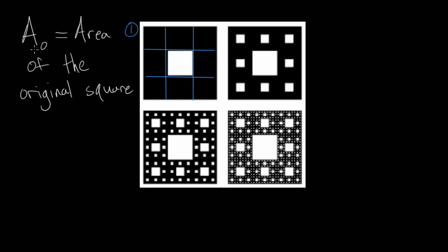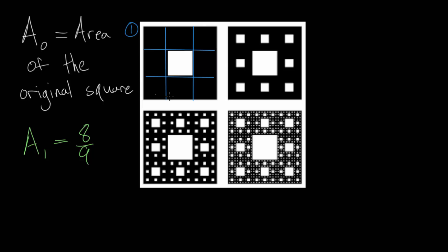If a sub zero is the area before removing any of the middle squares, then a sub one is the area after the first step is completed — we've removed the middle square in white. The area can be calculated by thinking about how many squares remain: we have eight squares left out of nine, so the area after step one is eight ninths of the original area, a sub zero.